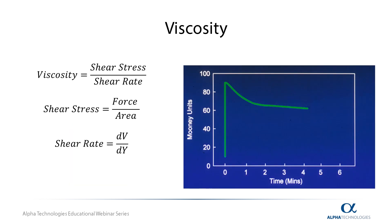Viscosity is a fluid property that indicates the resistance of a fluid to either stress or movement. More viscous materials will more strongly resist movement and will require more energy to flow or process. Different materials will have different viscous responses to various stimuli, making it an important property to monitor and control in a process. Viscosity can be mathematically defined as the shear stress over the change in shear rate, where shear stress is the force over the area and shear rate is the change in velocity with respect to the change in position.